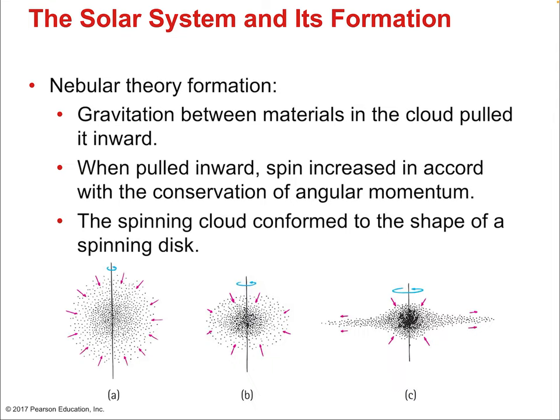The nebular theory says that gravitation between materials in a cloud pulled it inward. The cloud became smaller as gravity condensed it, and the core collapsed in on itself, becoming incredibly hot and dense — eventually becoming the sun, and fusion began. Trillions upon trillions of kilometers of open space originally collapsed into the sun, with the leftovers becoming everything else.